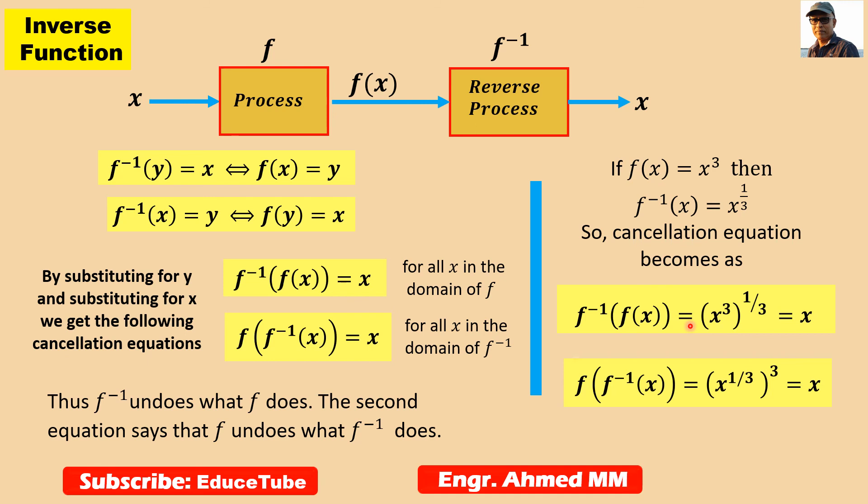So what we are getting, these two equations simply say that cube functions and cube root functions cancel each other. We get x and x.